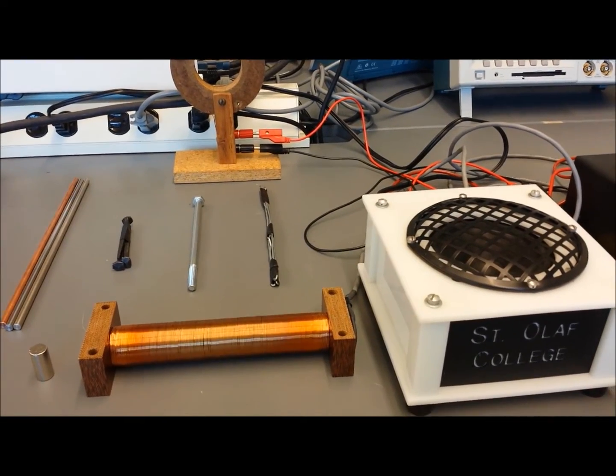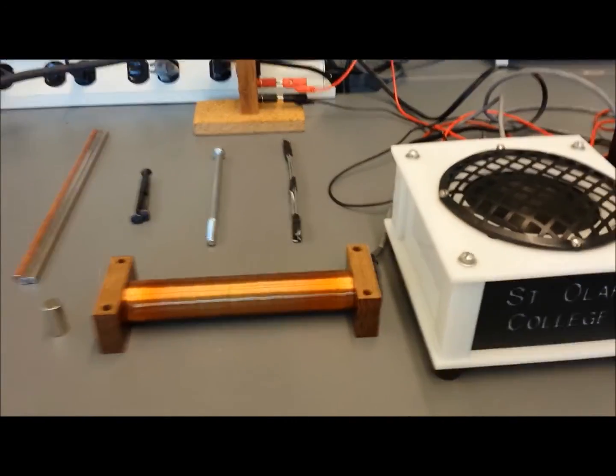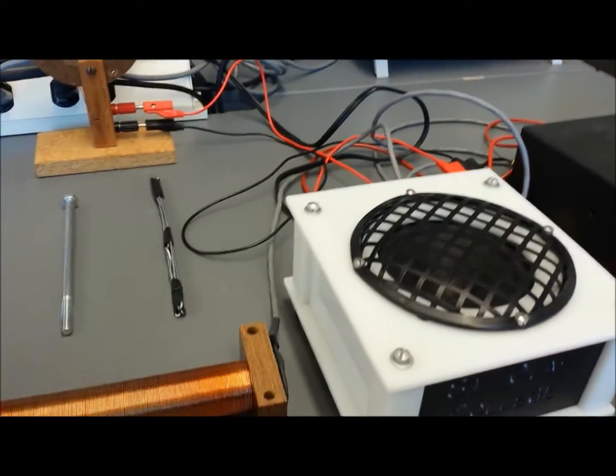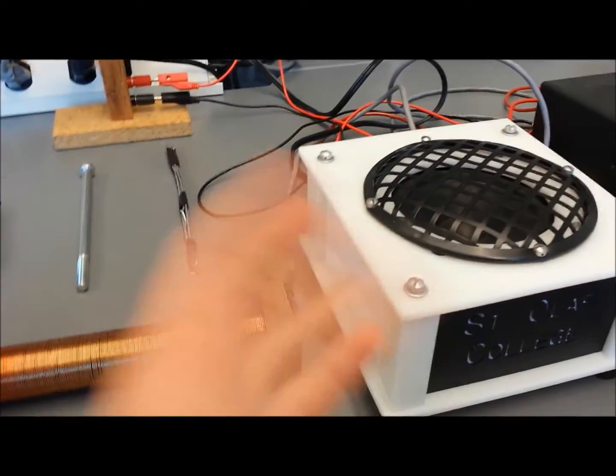Now, I'd like to demonstrate the Barkhausen noise effect in real life. We start with a solenoid, which is wire wrapped around a hollow tube, and that is connected to an amplifier, which is wired to a speaker so that we can hear it.